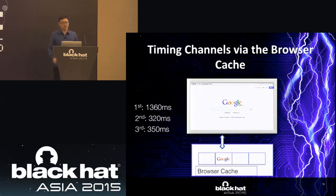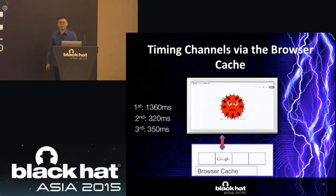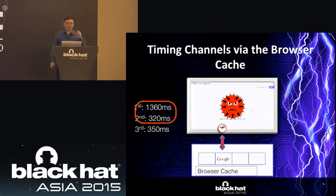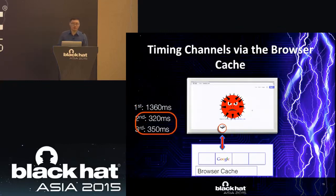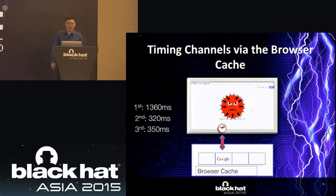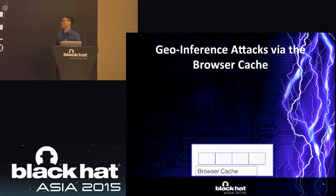However, if a user visits a malicious website, that site can load cached resources and measure the time difference. The time difference between loading without cache versus with cache is quite significant. If a resource is already cached, the time difference is very small. Based on this observation, the attacker can infer whether specific resources are cached in the browser. Previously, this timing channel was used by researchers to infer browsing history. In this work, we show these timing channels are still open and attackers can use them to infer users' geolocations.